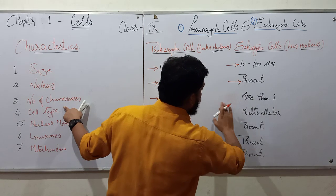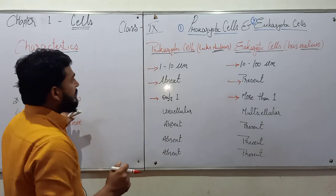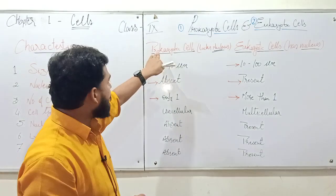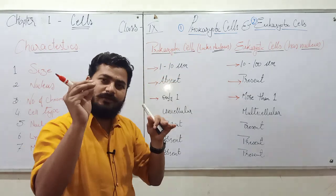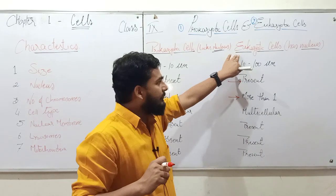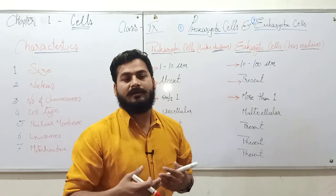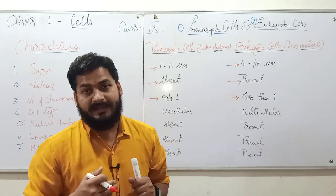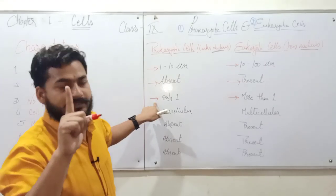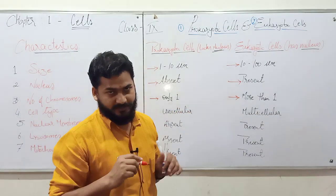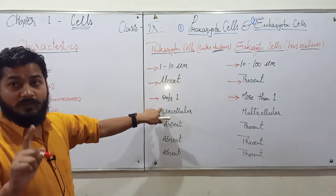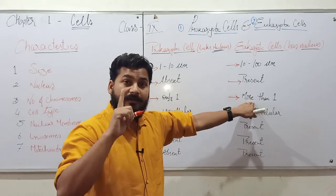Prokaryotic cells are primitive cells, so since these cells are primitive the genetic data is also small. Eukaryotic cells are developed ones — they have nucleus and perform high activity, so they have more genetic data. Since genetic data is less in prokaryotic cells, they bear only 1 chromosome, while eukaryotic cells bear more than 1 chromosome.